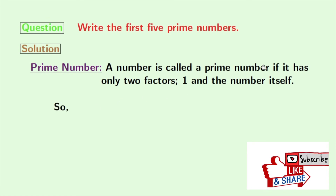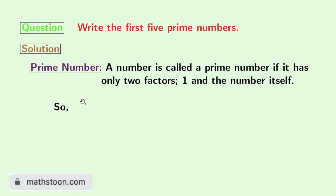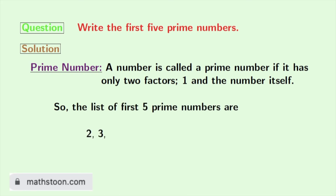So by the definition of a prime number, we can say the first five prime numbers are two, three, five, seven and eleven.